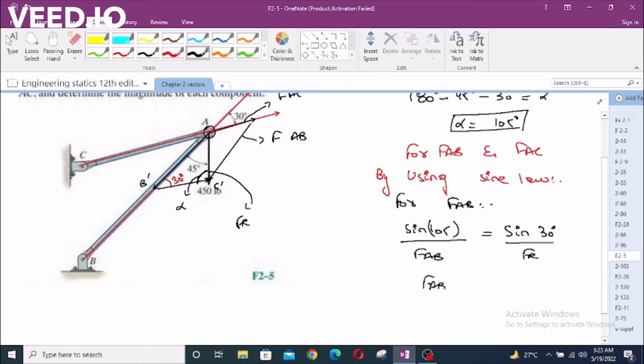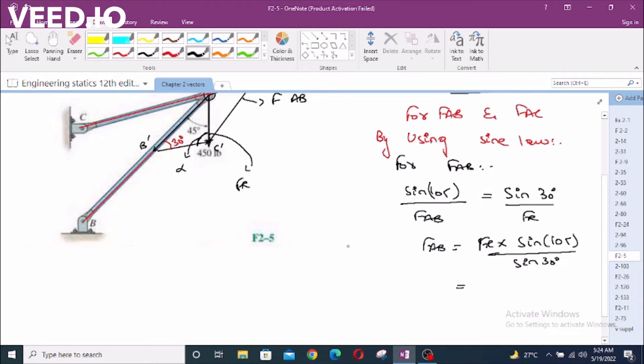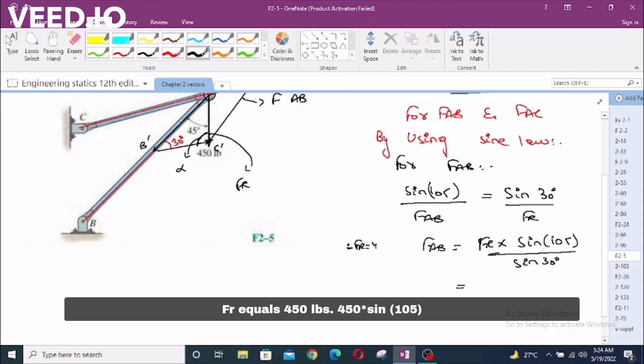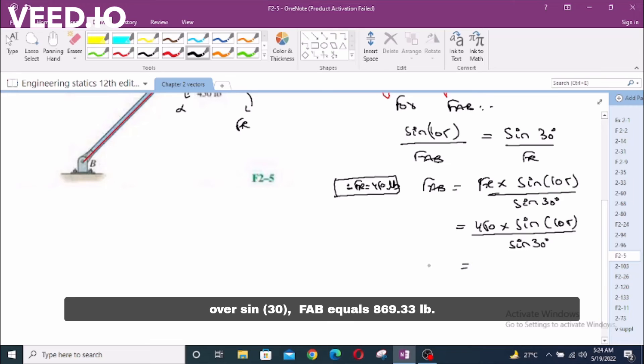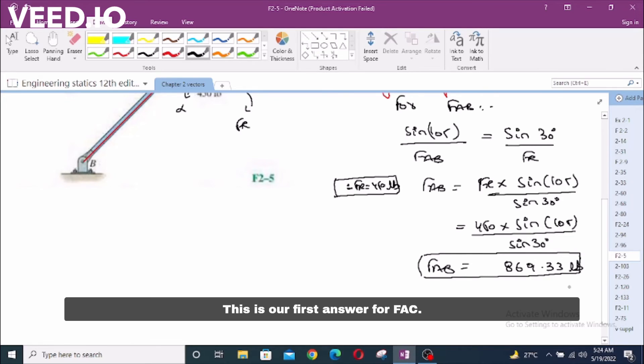F_AB equals FR times sin 105 degrees divided by sin 30. On putting all these values, FR is given. FR equals 450 lbs times sin 105 over sin 30. F_AB equals 869.33 lbs. This is our first answer.